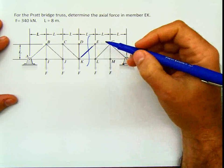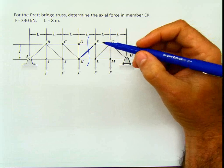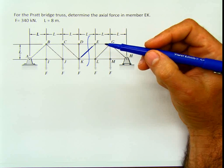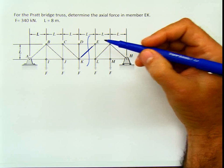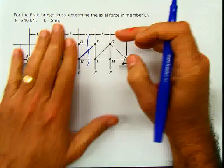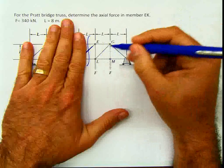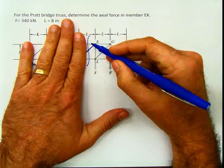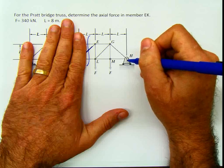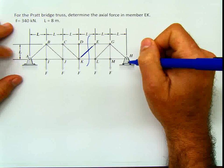But before doing that, we have to be sure of the number of unknowns. The maximum number of unknowns using the method of sections is 3, because we have three equilibrium equations in 2D. If I make a cut here and separate the bar, using the right part, I have 3 unknown bars plus one unknown reaction — that's 4. That means I can't solve it immediately, and the first thing I have to do is calculate the reactions.